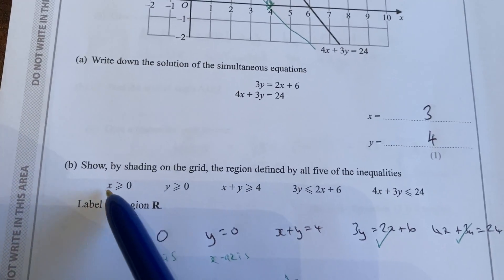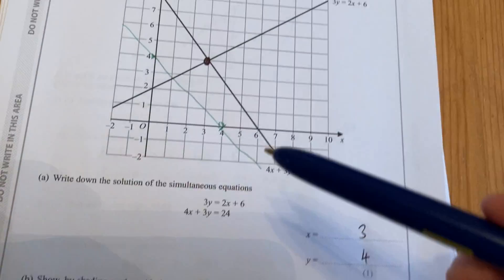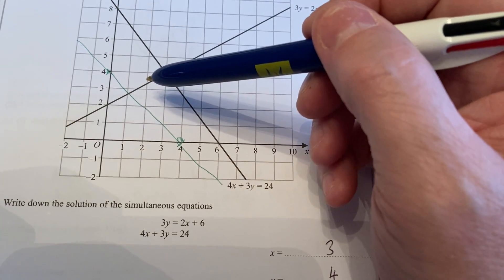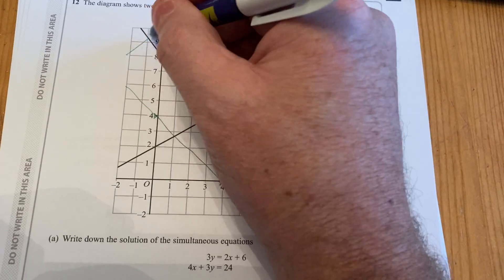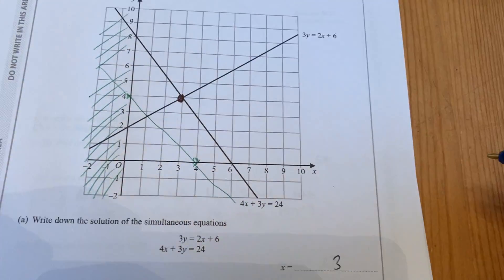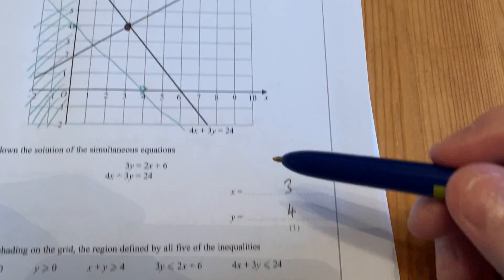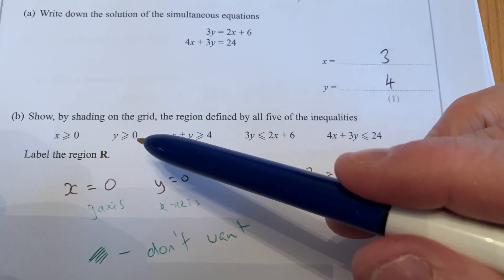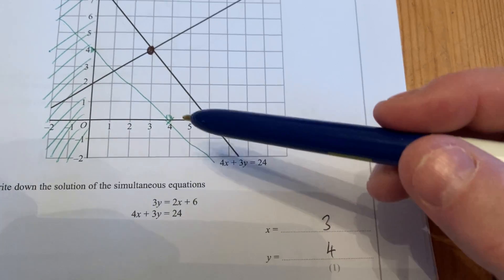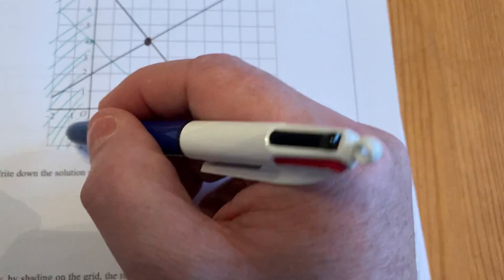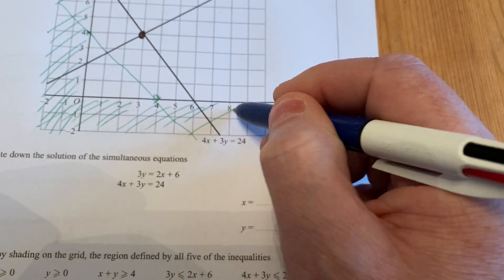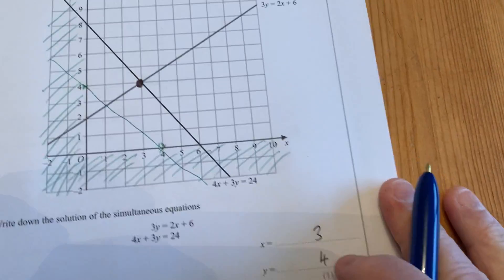So I do want x is bigger than 0 on the y-axis. x is bigger than 0 on the right-hand side, so I'm going to cross out the bit that I don't want, which is on the left-hand side. Also, the next second one is y is bigger than 0 is what I do want, so on the x-axis I want the bit that is bigger than 0, so I'm going to cross out the bit that I don't want, which is underneath 0, on the x-axis.